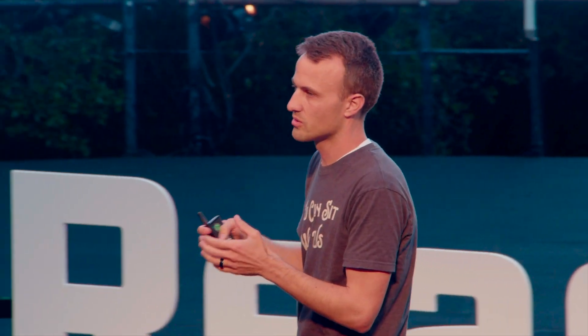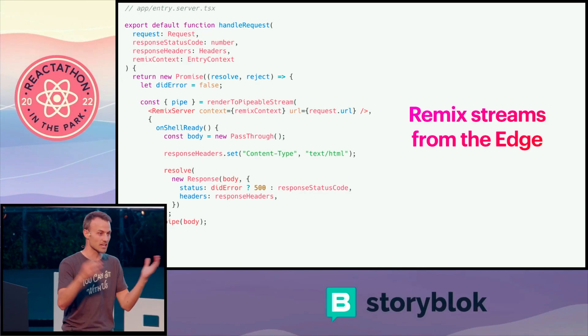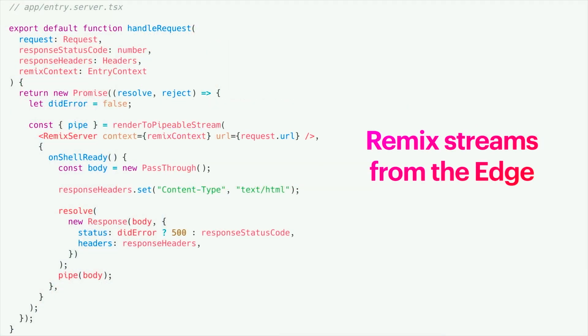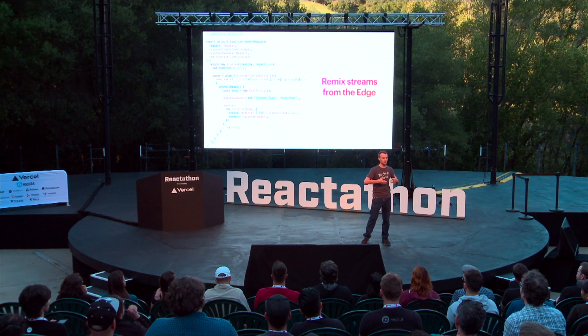The last thing is Remix streams from the edge. As soon as React 18 came out with streaming, we were really excited. Before streaming, you'd generate your HTML with render to string and then send it all back. The problem is if you have data that takes a long time — like a database query to get user data — if that query takes a long time, you can't send anything back until that string of HTML is ready. With streaming, you can start sending a response so the user gets something really fast, and then fill things in later.